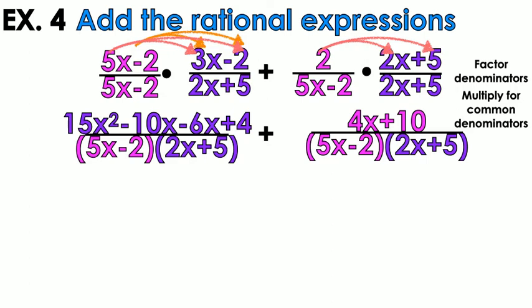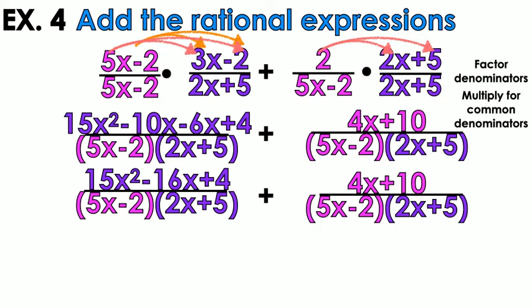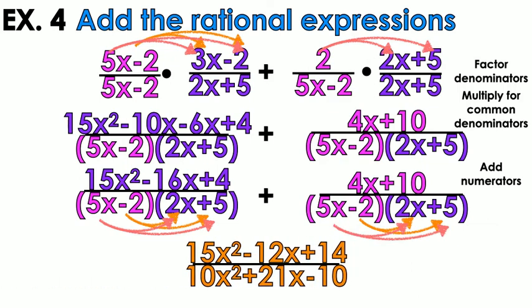Combine like terms on the left: negative 10x minus 6x gives negative 16x in the middle, bring everything else down. Add the numerators and combine like terms: 15x squared, then negative 16x plus 4x gives negative 12x, and 4 plus 10 is 14. On the bottom, when distributed out, we get 10x squared plus 21x minus 10. Then define the domain for the values x cannot equal.